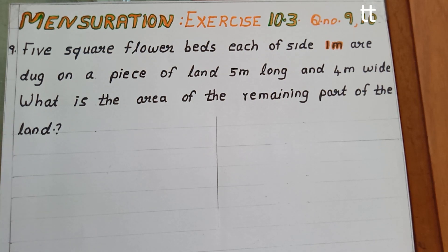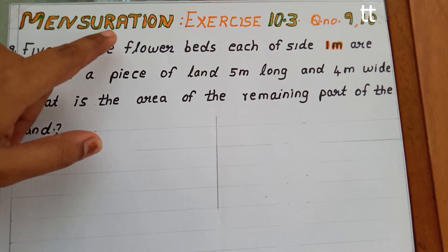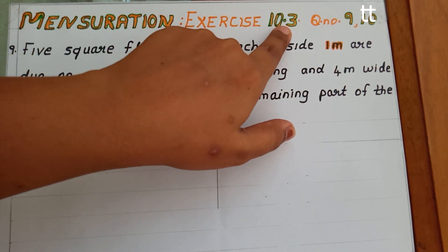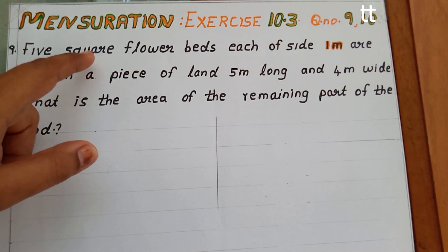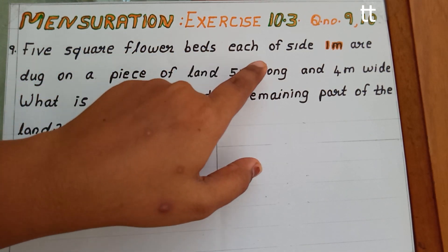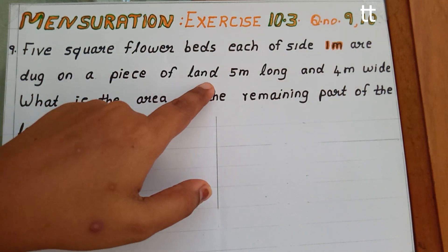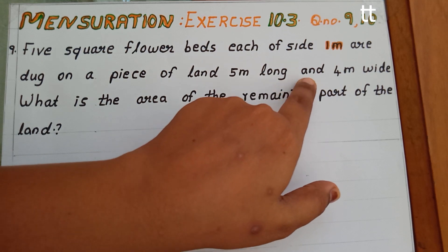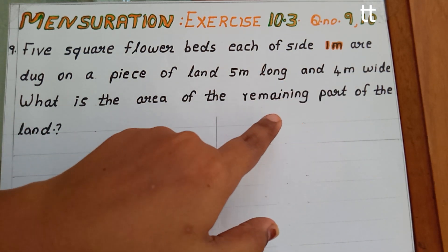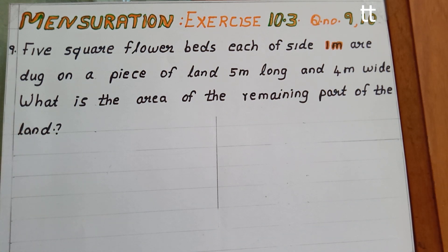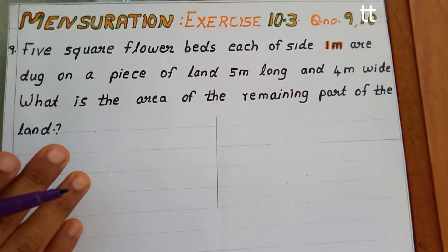Hello dears, today we can deal with question number 9 of the chapter mensuration, exercise 10.3. Question number 9 says that 5 square flower beds each of side 1 meter are dug on a piece of land 5 meter long and 4 meter wide. What is the area of the remaining land? This is our question.